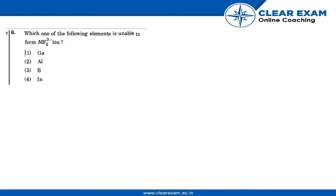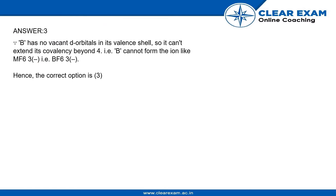Question number six: which of the following elements is unable to form MF₆³⁻ ions? First part Ga, second part Al, third part B, fourth part In. The answer is B. B has no vacant d orbitals in its valence shell, so it cannot extend its covalency beyond four.